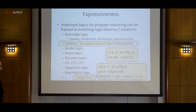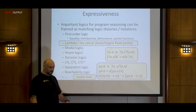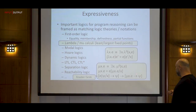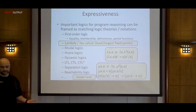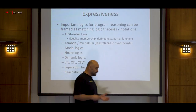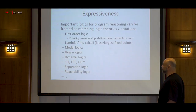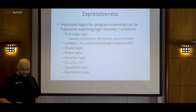To capture least fixed points specifically, we use a Knaster-Tarski pattern, which captures the essence of the Knaster-Tarski theorem: if psi is a fixed point of e, then mu is smaller than it. Once you add this proof rule, you have least fixed points, and from there you can define many other important logics: modal logics, Hoare logic, dynamic logics, all of LTL, CTL, CTL*, and separation logic — all as matching logic theories.